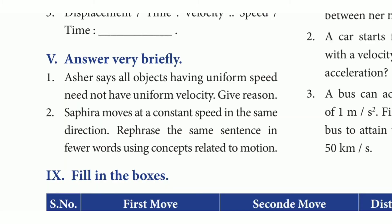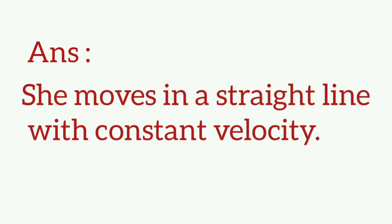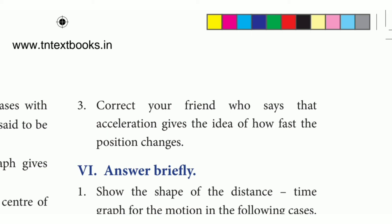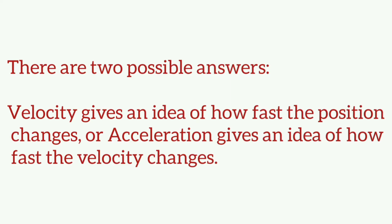Second question: The sapra moves at a constant speed in the same direction — rewrite in fewer words using technical terms. Answer: It moves in a straight line with constant velocity. Third question: Correct your friend who said acceleration gives the idea of how fast the position changes. Answer: Velocity gives the idea of how fast the position changes; acceleration gives the idea of how fast the velocity changes.